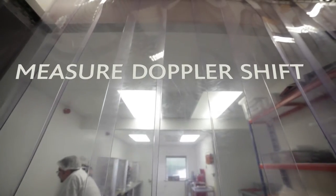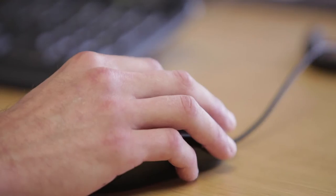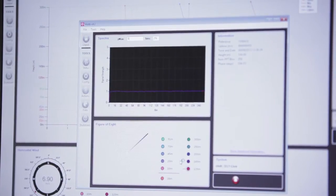We can measure the Doppler shift, which is a measure of the speed of those particles, and use that to infer the wind speed at a whole range of heights.